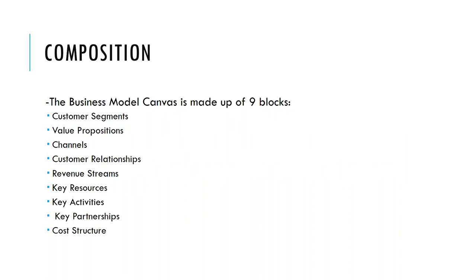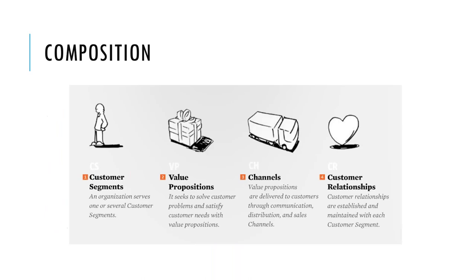The business model canvas is made up of nine blocks. We're going to talk about them one by one in detail, and I'll show you the main questions you need to ask yourself to determine what information goes in each block. These nine blocks are: customer segments, value propositions, channels — which connect value propositions to customer segments — customer relationships, revenue streams, key resources, key activities, key partnerships, because you're not going to do everything by yourself, and finally the cost structure, which you usually leave for last once you have the infrastructure of the rest of the blocks.